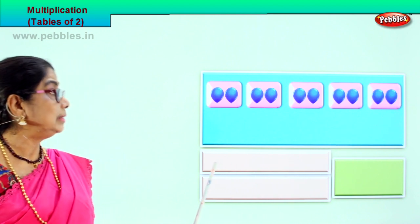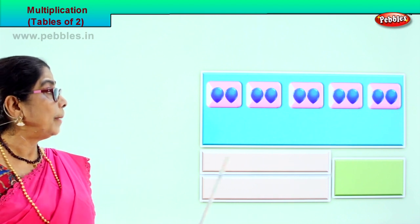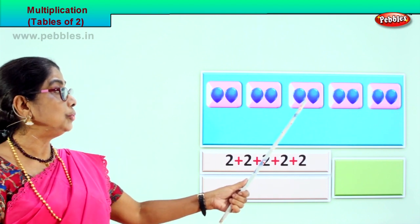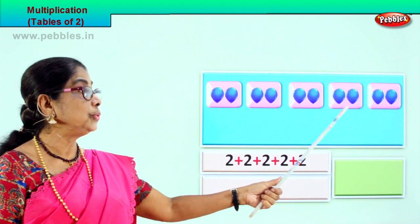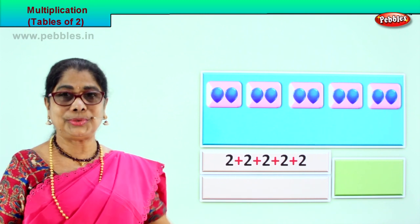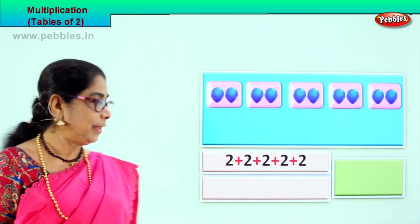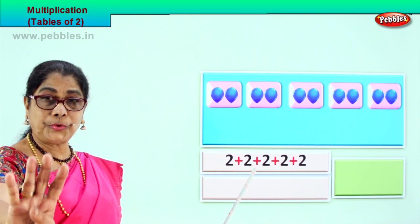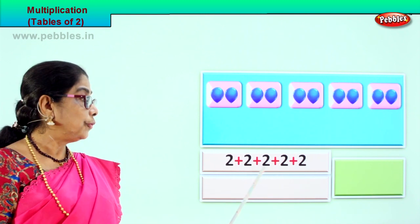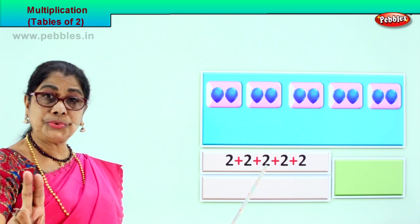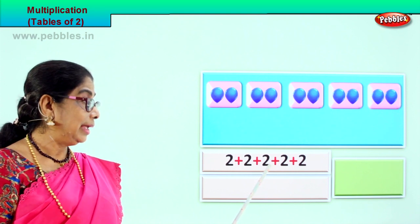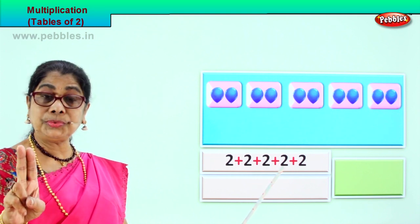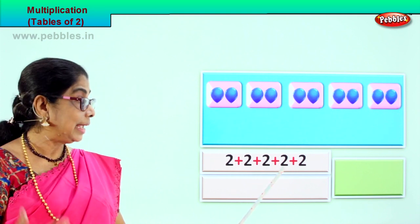That is, two plus two plus two plus two plus two. Two plus two: four. Four plus two: six. Six plus two: eight. Eight plus two: ten.